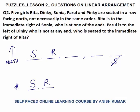That was the symbolic notation: S, R. Parul is to the left of Dinky. Dinky is not at the end. One end is already filled with Sonia, so Dinky will not sit at the right end either. Can Dinky be at the third place? No, because Parul must be to the left of Dinky and there would not be enough room. So Dinky is not at the end.